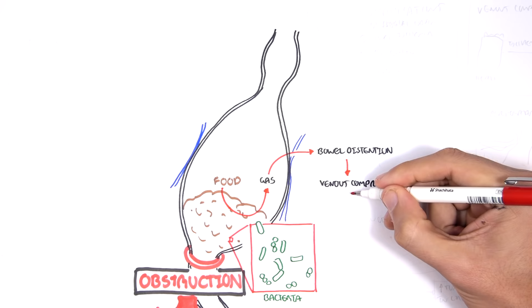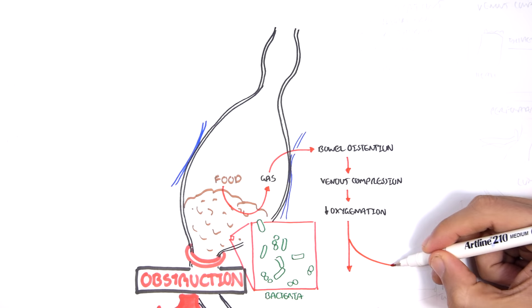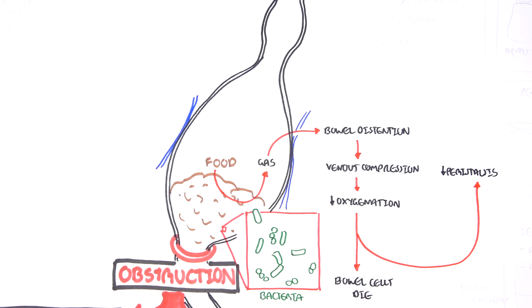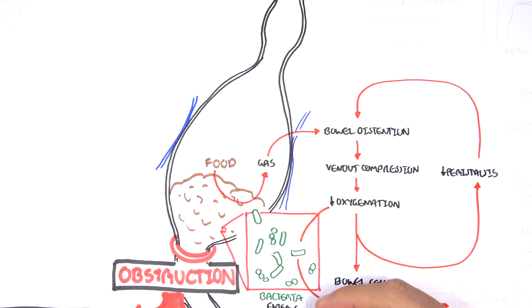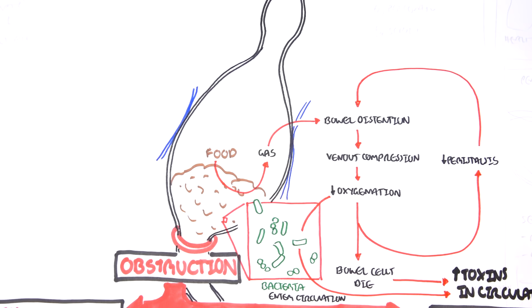Bowel distension compresses the vessels that supply the bowel, causing venous compression. Venous compression decreases oxygen supply to the bowel. Decreased oxygenation means the cells of the intestine die, and it also decreases peristalsis further, aggravating bowel distension. Additionally, decreased oxygenation promotes the anaerobic bacteria in the area to enter circulation. When bacteria enter circulation and intestinal cells die, these toxins in the circulation can result in sepsis.